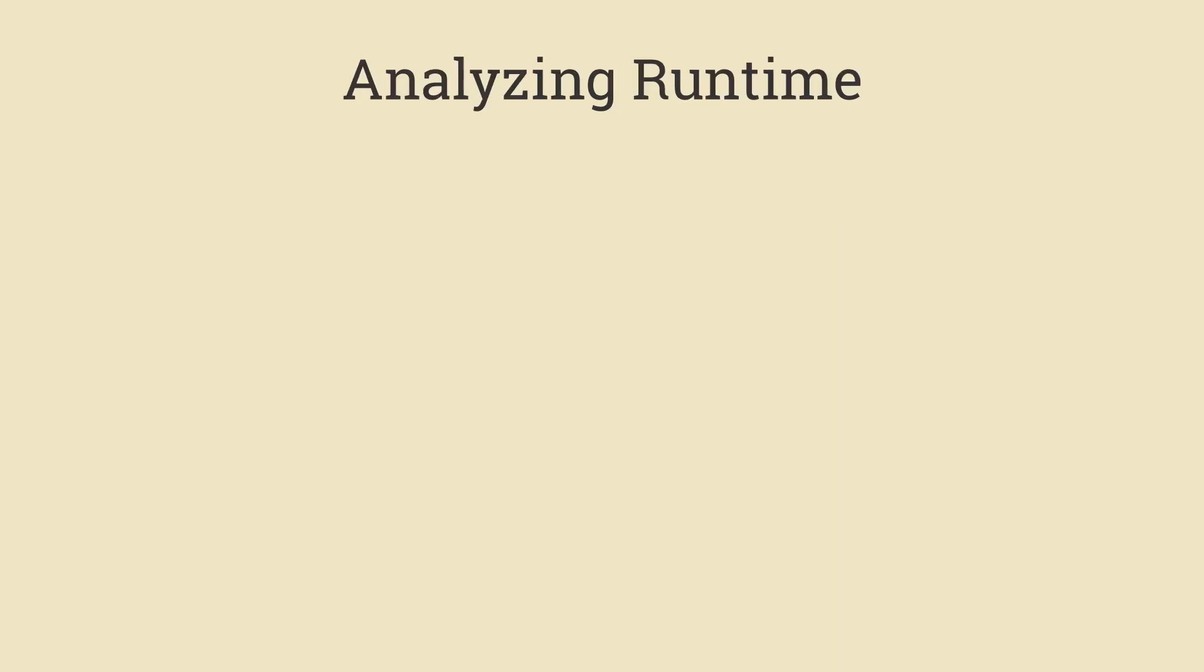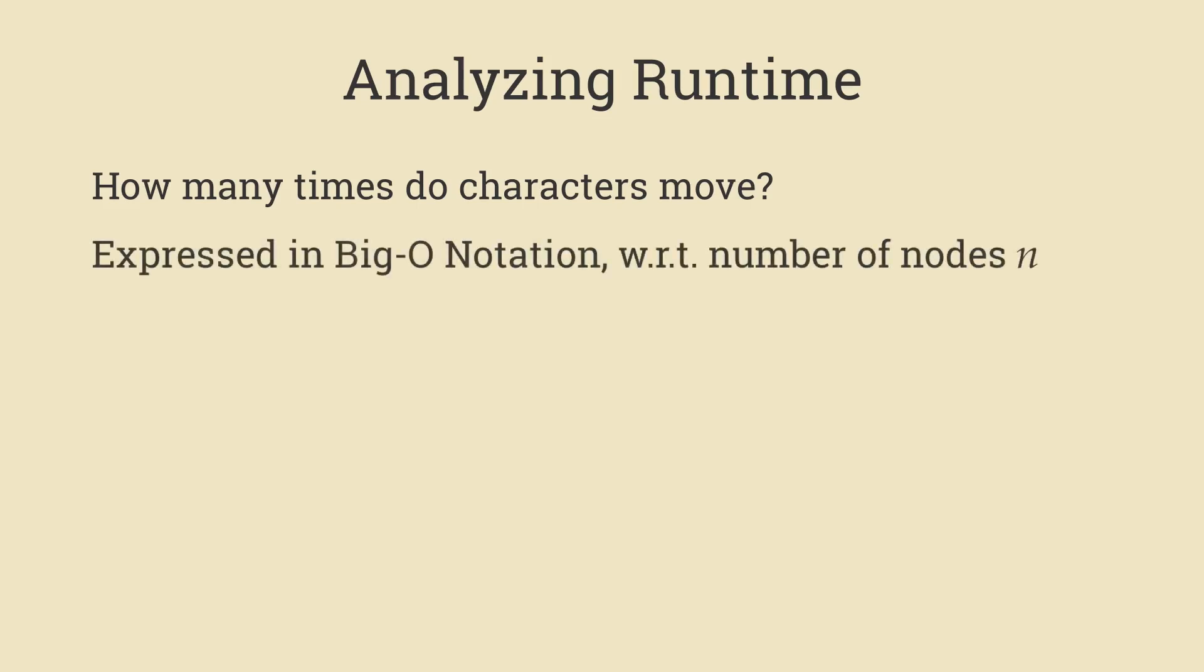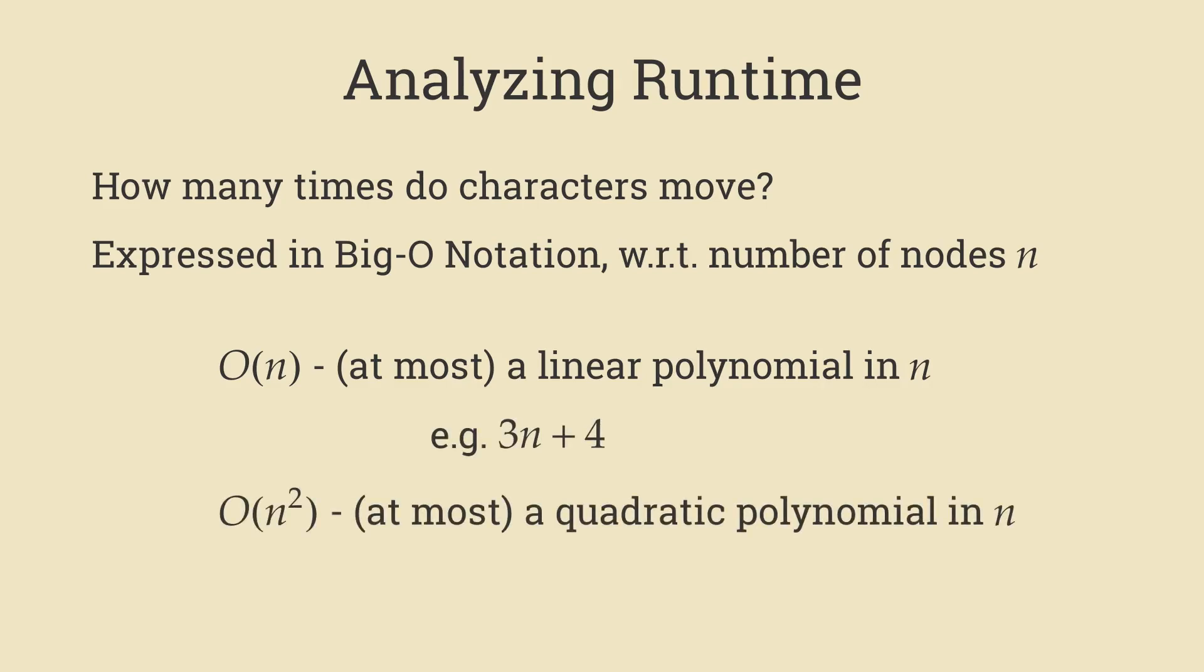To describe how long these algorithms take, we're going to be counting up the number of times the characters move. Our answers are going to be expressed in big O notation with respect to the size of the linked list. In other words, the number of nodes n. Now, if you haven't seen big O notation before, I don't want to delve into the formal definition, but if I say something like big O of n, I'm talking about some kind of linear polynomial. If I say something like big O of n squared, then we're talking about a quadratic polynomial.